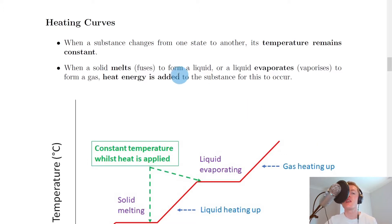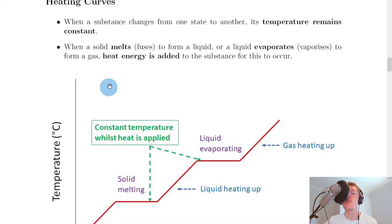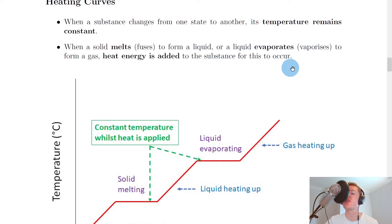For heating curves, when a substance changes from one state to another, its temperature remains constant. So when a substance undergoes a change of state, also known as a phase change, its temperature remains constant, and this is an important thing to remember. So when a solid melts or fuses to form a liquid, or a liquid evaporates or vaporizes to form a gas, heat energy is added to the substance for this to occur.